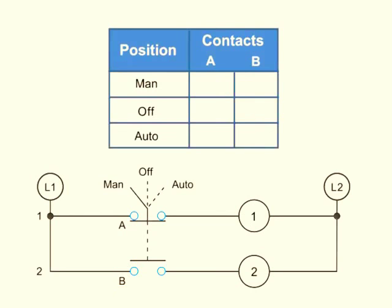In this illustration of a three-position selector switch, a third row is added to the truth table. So we now have a manual position, an OFF position, and an AUTO.